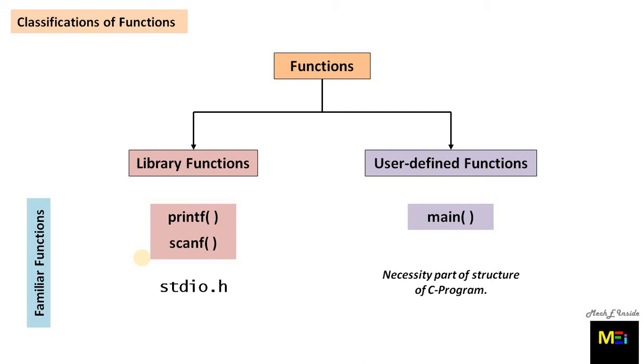The main distinction between these two categories is that library functions are not required to be written by us, whereas a user-defined function has to be developed by the user at the time of writing a program. However, a user-defined function can later become part of the C program library. So the ultimate aim is to understand the development of user-defined functions in a C program.